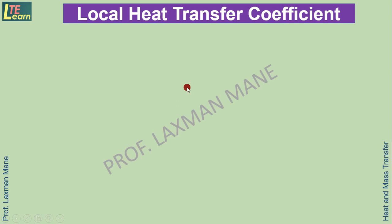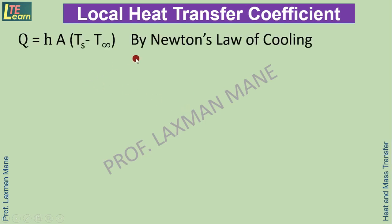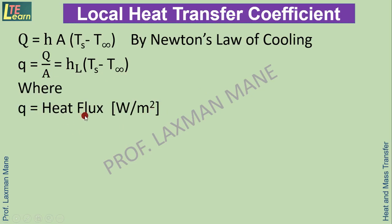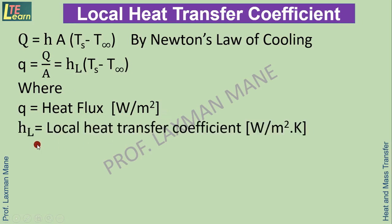Local Heat Transfer Coefficient: By Newton's Law of Cooling, Q equals H into A into Ts minus T infinity. Here, small q equals capital Q divided by A, which equals HL into Ts minus T infinity. Small q is the heat flux — the ratio of heat transfer rate to area — so its unit is Watt per m². HL is the local heat transfer coefficient, with unit Watt per m² Kelvin.